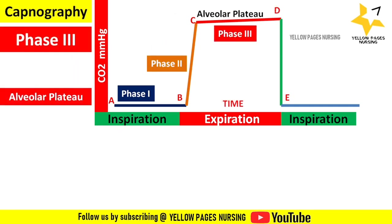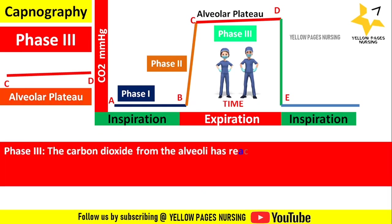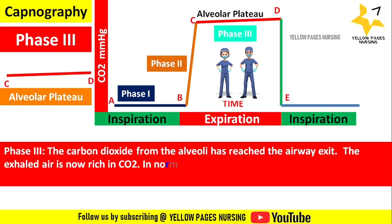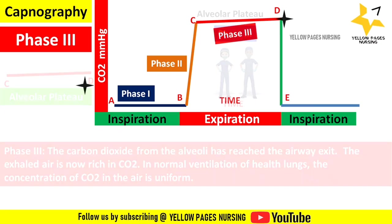Next comes phase 3, from C to D, otherwise called the alveolar plateau. In phase 3, the carbon dioxide from the alveoli has reached the airway exit. The exhaled air is now rich in carbon dioxide, and the concentration of carbon dioxide is uniform. The alveolar plateau is flat with a slight upward tilt towards the end, illustrating the uniform concentration of carbon dioxide in the pulmonary system.